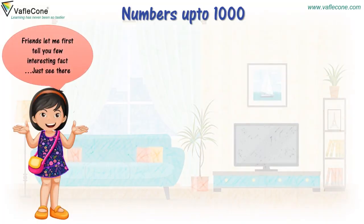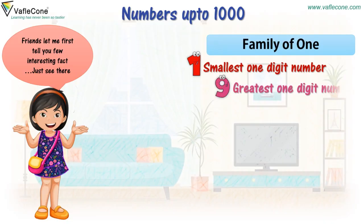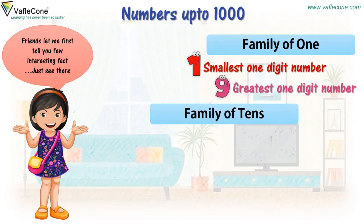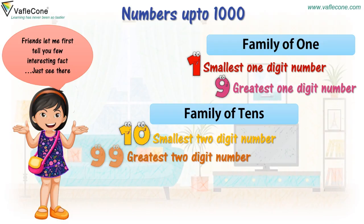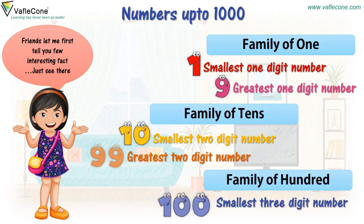Friends, let me first tell you a few interesting facts. Just see there. 1 is the smallest one-digit number. 9 is the greatest one-digit number. 10 is the smallest two-digit number. 99 is the greatest two-digit number. 100 is the smallest three-digit number.